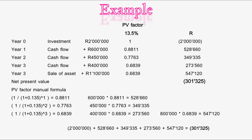All that's left is to total everything up. The initial investment of two million rand is negative. Adding five hundred and twenty eight thousand six hundred and sixty rand from year one, plus three hundred and forty nine thousand three hundred and thirty five rand from year two, plus two hundred and seventy three thousand five hundred and sixty rand from year three, plus the disposal amount of five hundred and forty seven thousand one hundred and twenty rand, gives us a total net present value of negative three hundred and one thousand, three hundred and twenty five rand.